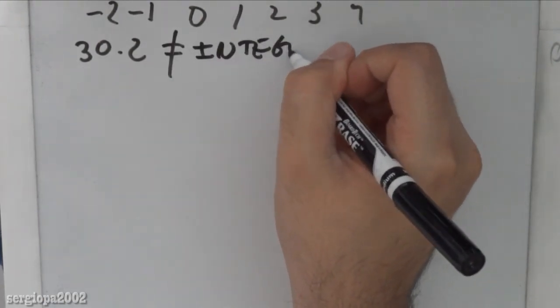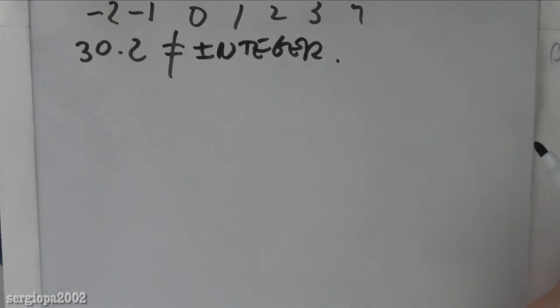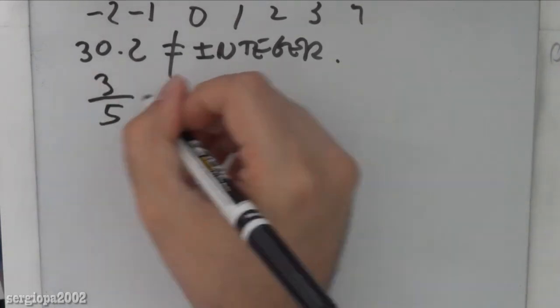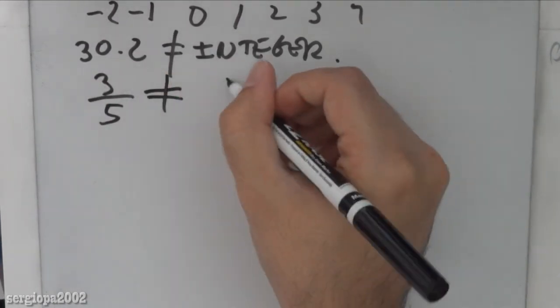And you see this concept a lot when you are doing programming too, when you use integer numbers or floats, etc. But when a number has a fraction like this, or if a number is like three-fifths, for example, this also is not an integer.